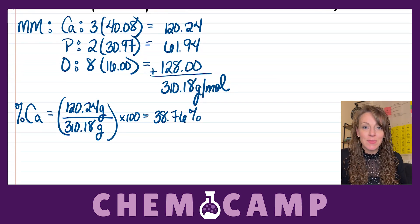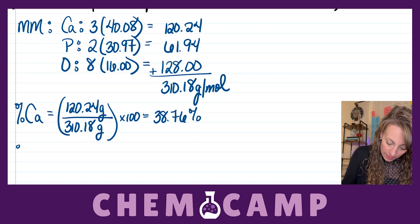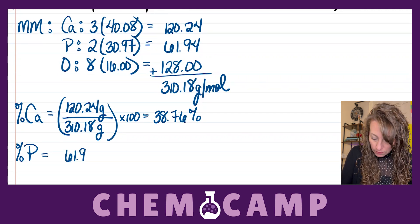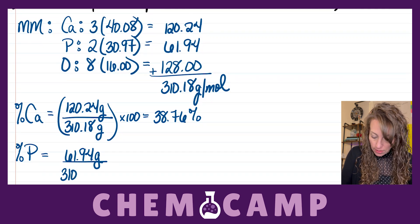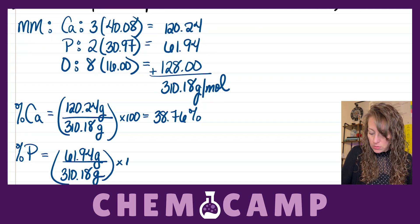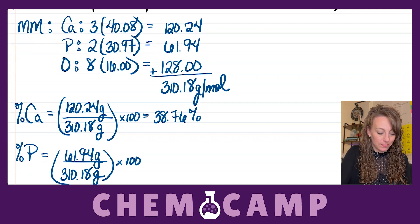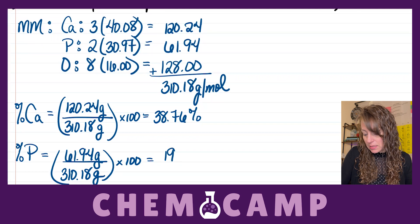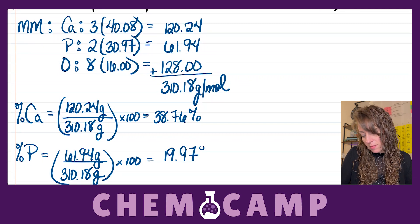Got to do the same thing for the other two atoms. So, for phosphorus, I have 61.94 grams, divided by the 310.18 grams, all multiplied by 100. Gives me 19.97 percent.